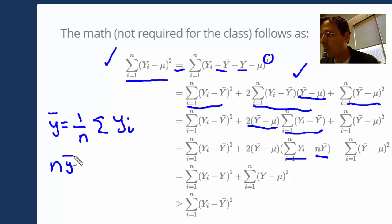So in other words, n times y bar is equal to the summation of y_i. So this is 0. That whole term then is 0.